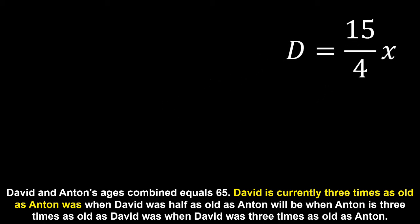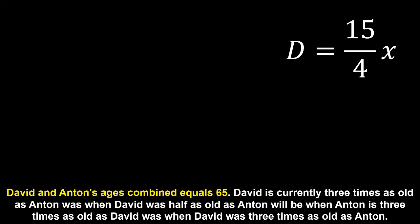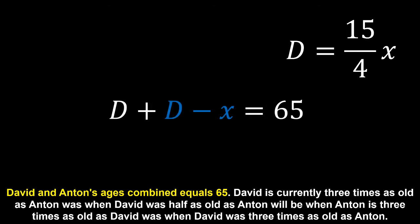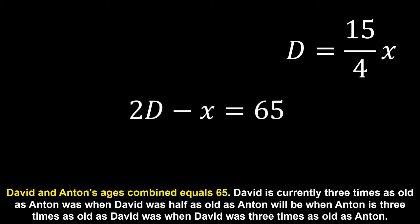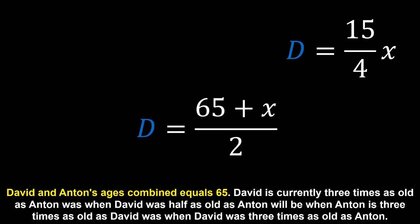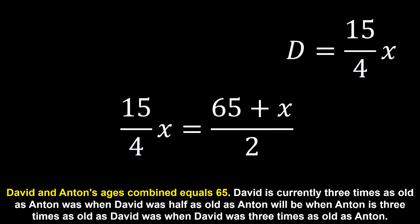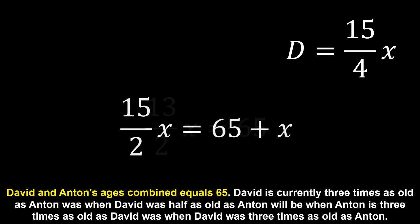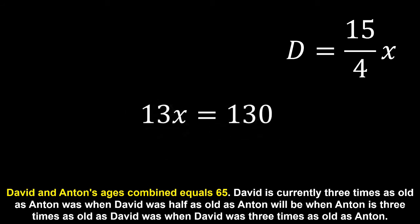We can put this equation to the side and look at the very first sentence in the puzzle, which tells us that David and Anton's ages combined equal 65. We represent this as David's age plus Anton's age equaling 65, and replace Anton's age with David's age minus the age difference, simplifying to 2 times David's age minus the age difference equals 65. We now have two equations both describing David's current age. Substituting one for the other and solving — multiplying both sides by 2, taking the difference from both sides, multiplying through by 2 again, and dividing by 13 — we get the difference in their ages being 10.